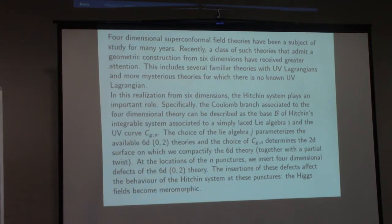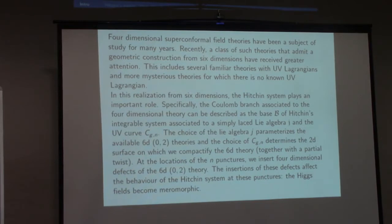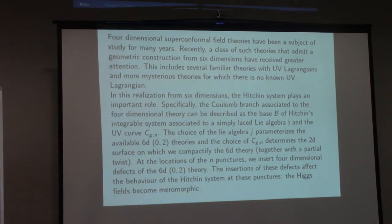In the realization from six dimensions, the Hitchin system plays an important role. Specifically, the Coulomb branch associated to the four-dimensional theory can be described as the base of the Hitchin system. We have a curve C with genus G and N punctures, and an algebra J.